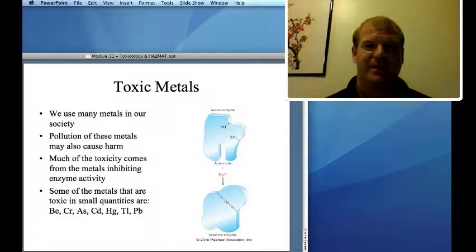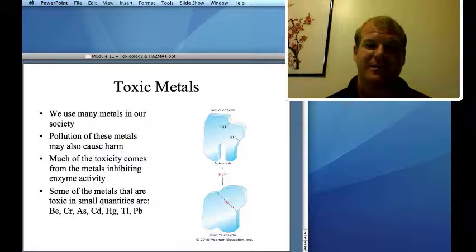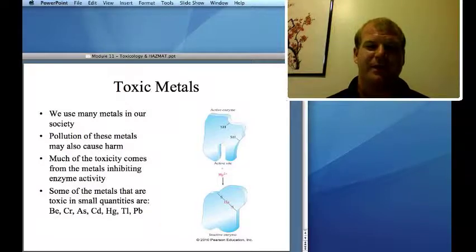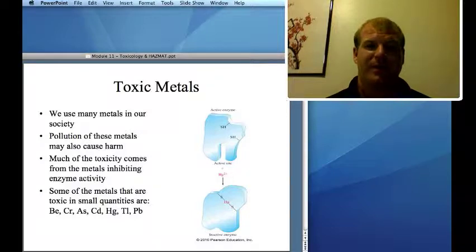Toxic metals: we use many metals in our society, and their pollution causes harm. Most of the toxicity comes from deactivating enzymes and inhibiting their activity. Mercury, for example, is a neurotoxin — it deactivates enzymes so your brain doesn't work as well. Some especially toxic metals include beryllium, chromium, arsenic, cadmium, mercury, tellurium, and lead — and plutonium is another example.